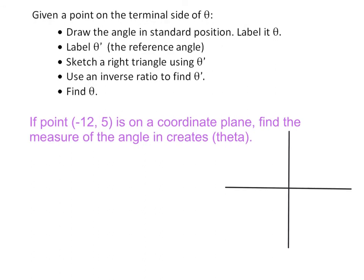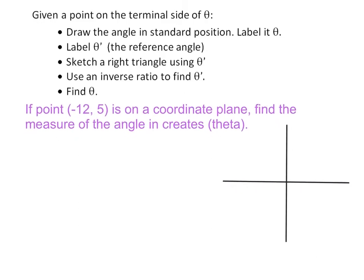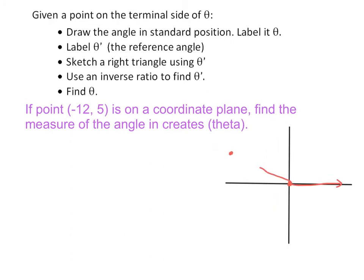If the point (negative 12, 5) is on the coordinate plane, let's start there. Negative 12 and positive 5 — that's a point right about here. We draw our initial side on the x-axis, and then draw the other side of the angle through that point. There is our original angle theta, and our goal is to find its measure.